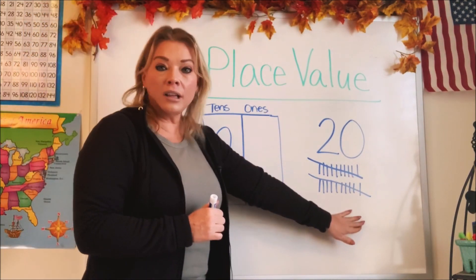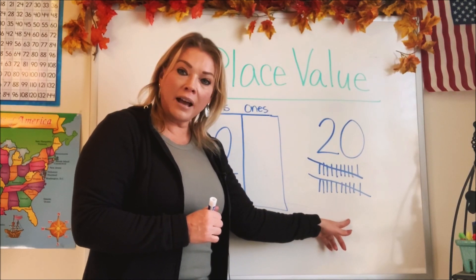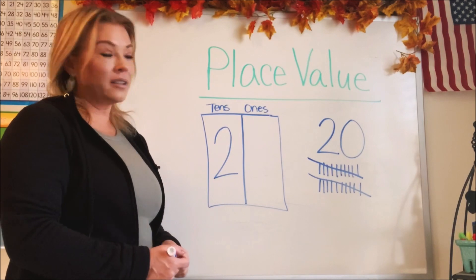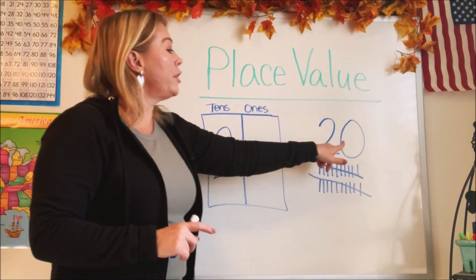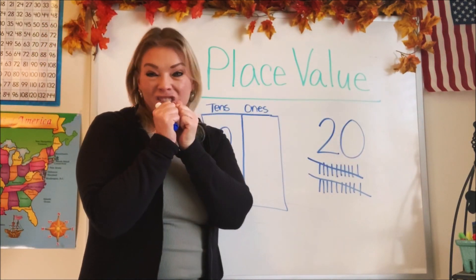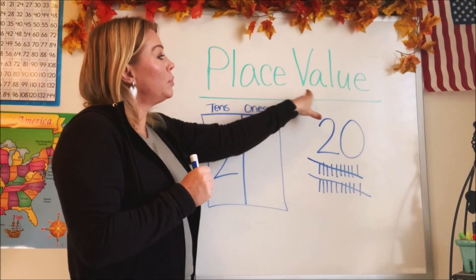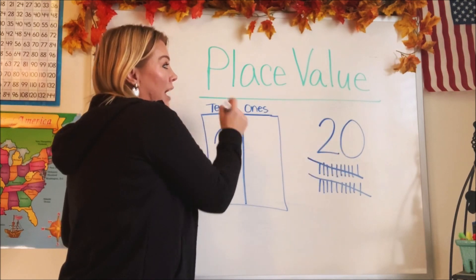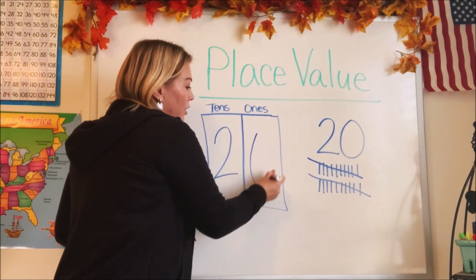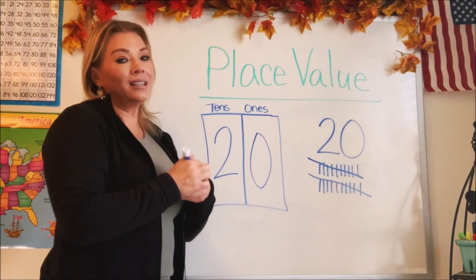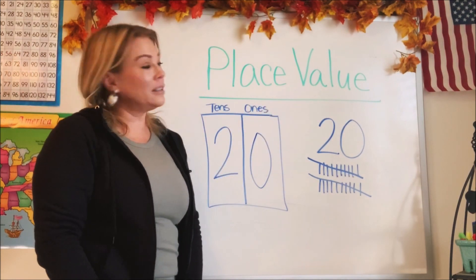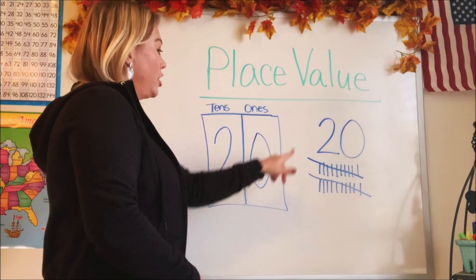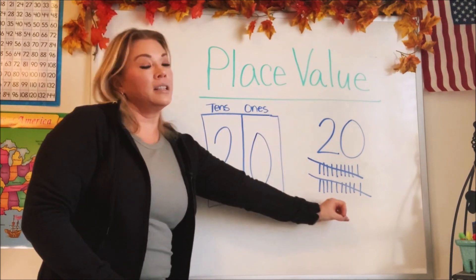How many ones are left over? Are there any baby ones left? There aren't. So what are we going to put in our ones? Even though zero means zilch or nada, it still has a place value — it still is a digit that has a place. So we have to put it in the ones. That just tells us there are no ones. There are two tens, but there are zero ones.